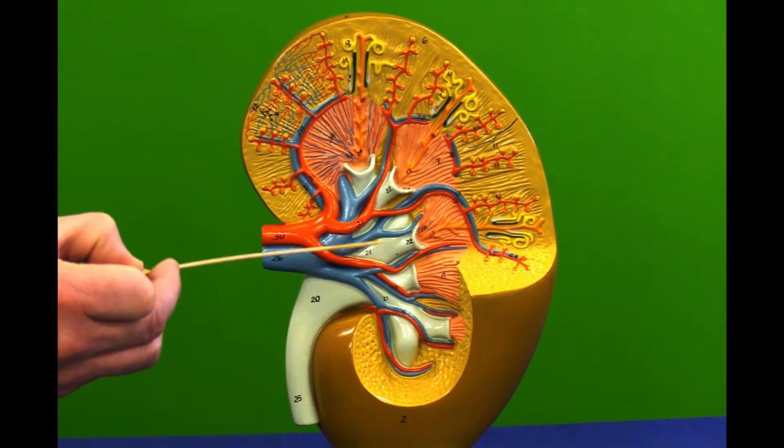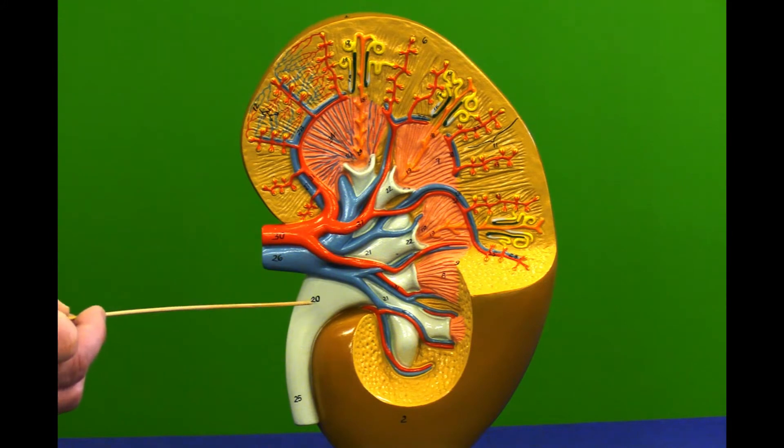The major calyx will funnel into the renal pelvis, and then from there the urine goes from the renal pelvis down the ureter on the way to the bladder.